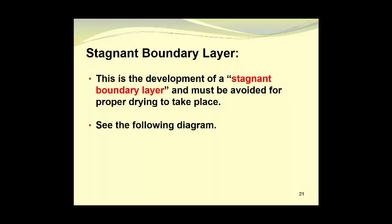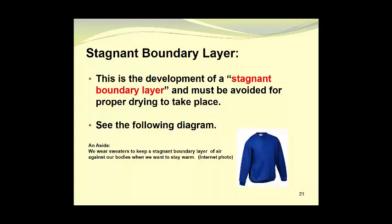We will look at this in the following diagram, but before we do, let's consider another example of a stagnant boundary layer. We wear sweaters to keep a stagnant boundary layer of air against our bodies when we want to stay warm. The material of the sweater traps a layer of air against our skin. Our skin then heats this layer of air, which cannot escape, and that keeps us warm. However, in warm weather when we want to cool down, we often use a fan to blow air across our bare arms, which removes the stagnant boundary layer of air, and that allows us to cool down rather than heating up.